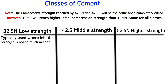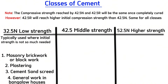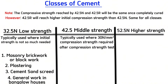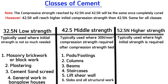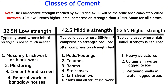Class 32.5 is typically used where initial strength is not critical — for example, in masonry brickwork or blockwork, plastering, cement screed for flooring, and general work in bungalow houses. Class 42.5 is used when concrete compressive strength must exceed 30 N after testing, and is needed for all structural work including pads or footings, columns, beams, staircases, lift shear walls, and slabs. Class 52.5 is used where high initial compressive strength is required — for example, heavy structures, columns in waterlogged areas, retaining walls in waterlogged areas, terrazzo flooring for high-activity areas, and building bridges in road construction.